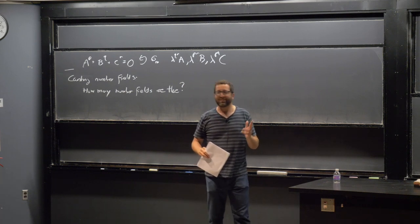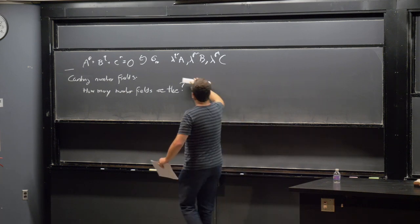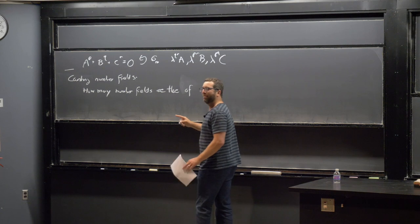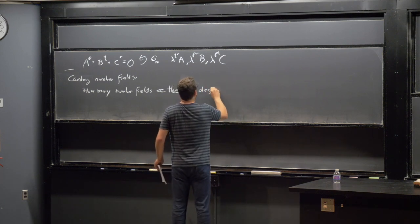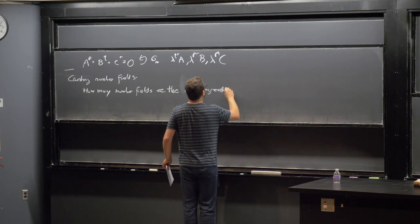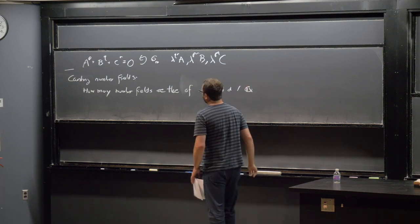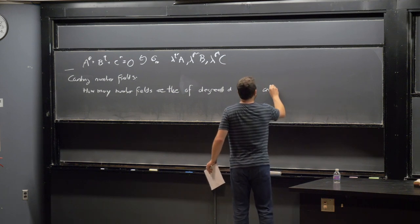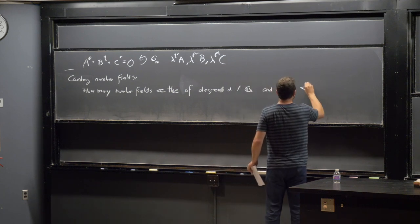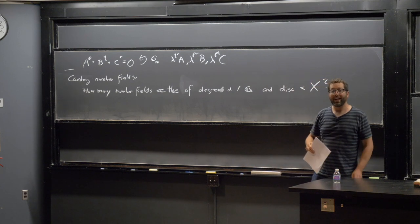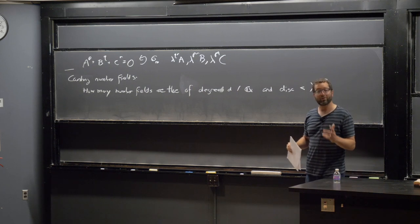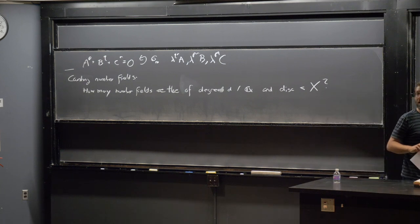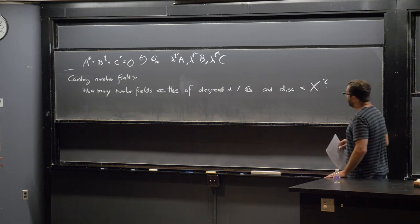Once we fix the degree and put an upper bound on the discriminant, we get a finite set of number fields by a rather old result of Hermite. Given a finite set, we should ask its size — the only thing we can ask — and in particular, how this behaves as a function of x. Let me decorate this a little more. Let's be grown-ups and not restrict ourselves to Q; let's have some arbitrary global field K here. So K is a global field, and this discriminant means the norm of the discriminant down to my global field.